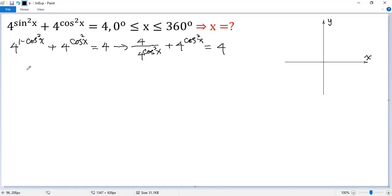To make the equation simpler, we do a substitution that t equals 4 to the power of cos²x. So we get 4 over t plus t equals 4.